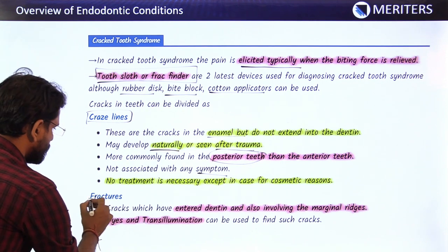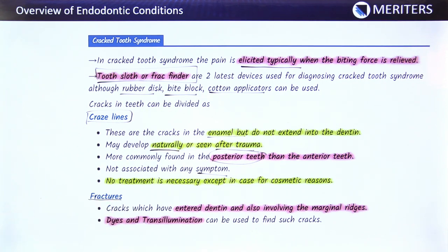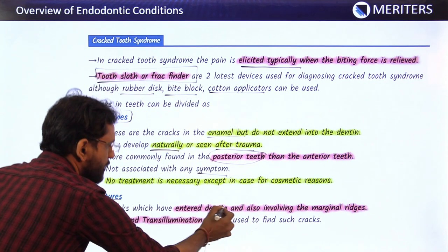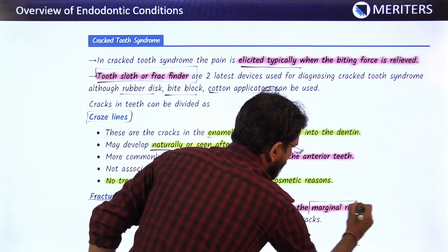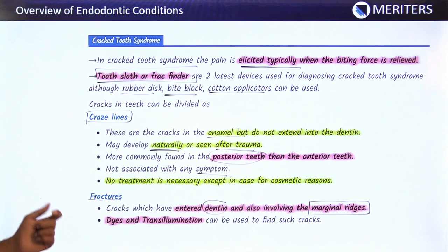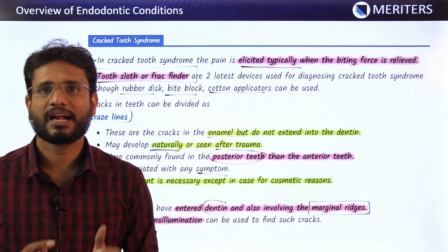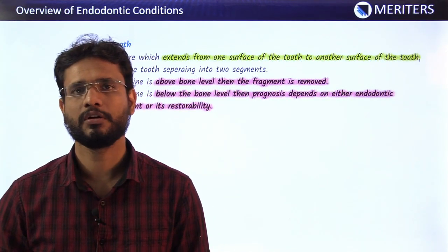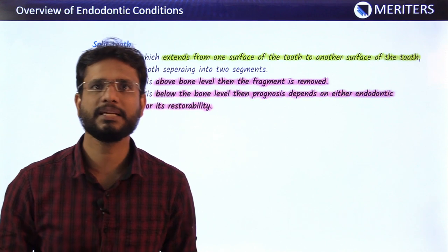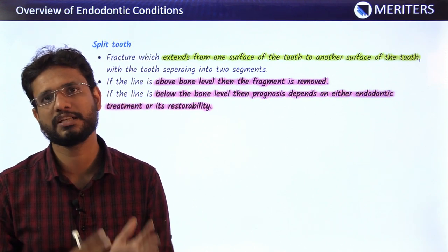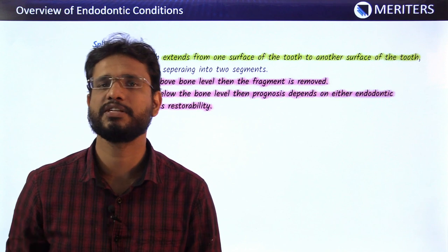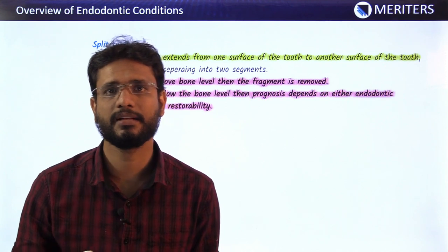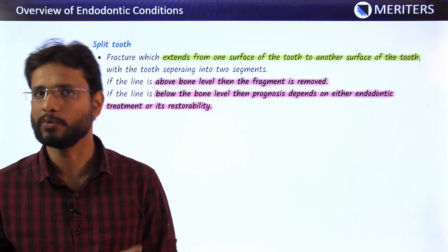The second type is fractures — cracks which have entered the dentine and also involve the marginal ridges of the tooth. These can be found by transillumination or by applying dyes. The third type is split tooth, where the fracture line runs from one surface of the tooth to the other, dividing the tooth into two segments.